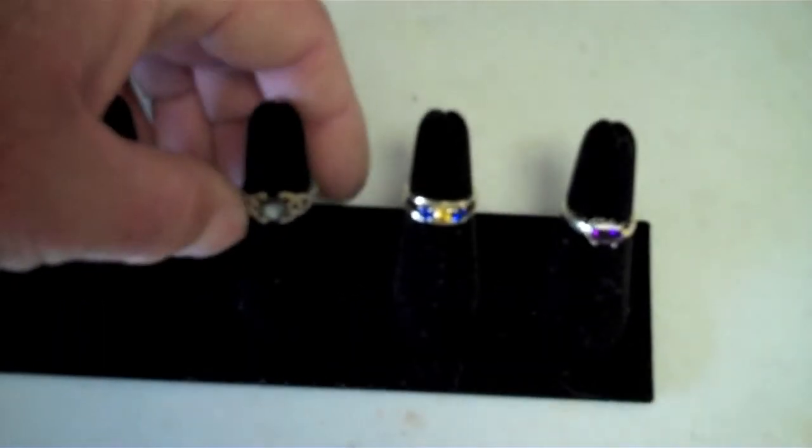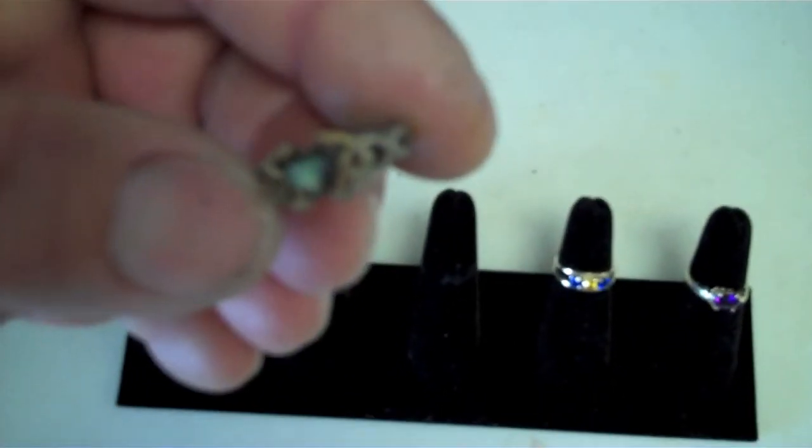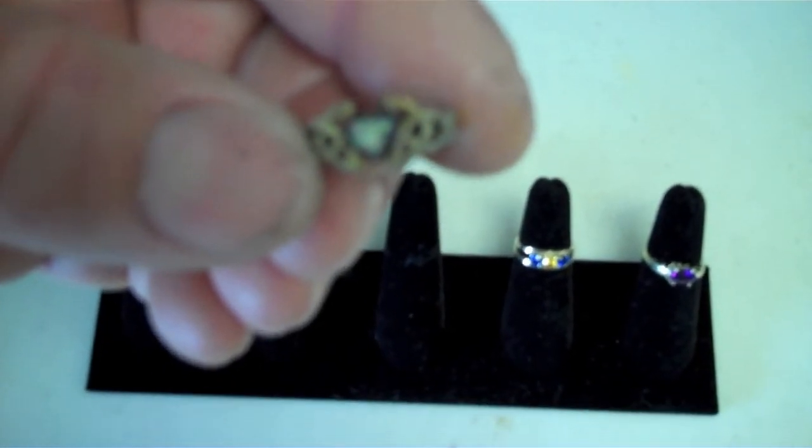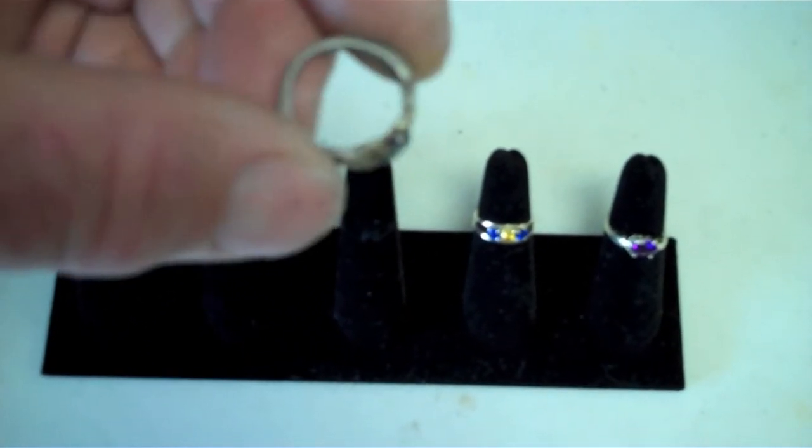I did clean up the heart ring. It came out pretty good. Got that little opal in the middle of it. Heart-shaped opal. It is 925.